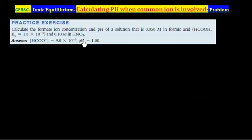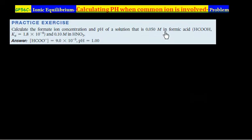Let us try this practice exercise, related to the concept of common ion. The question says: calculate the formate ion concentration and pH of a solution that is 0.05 M in formic acid and 0.1 M in HNO3. This is a case of a weak acid plus a strong acid solution.